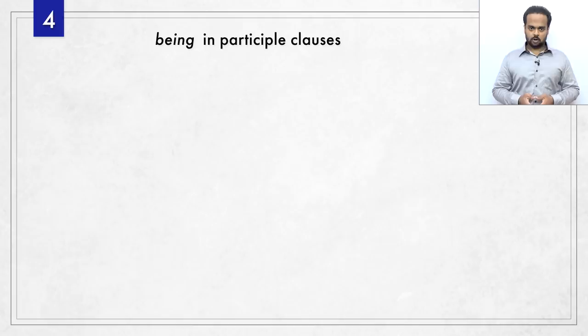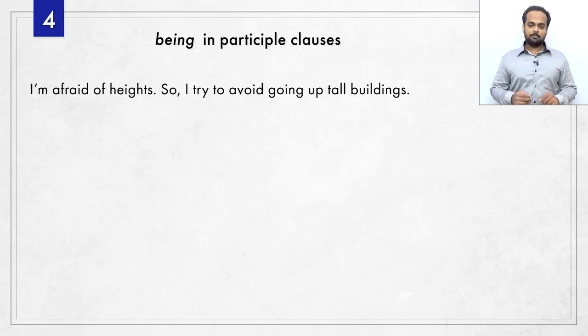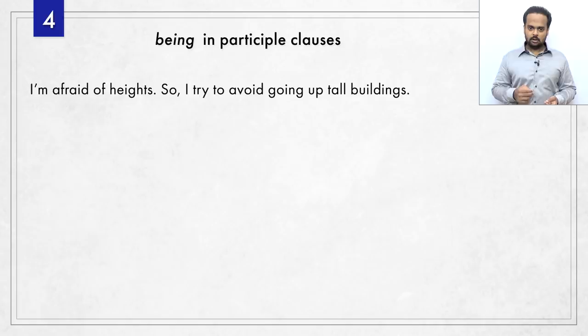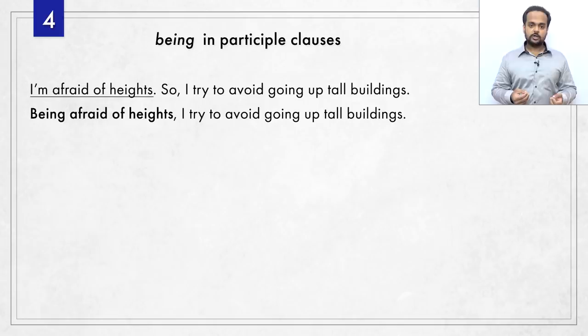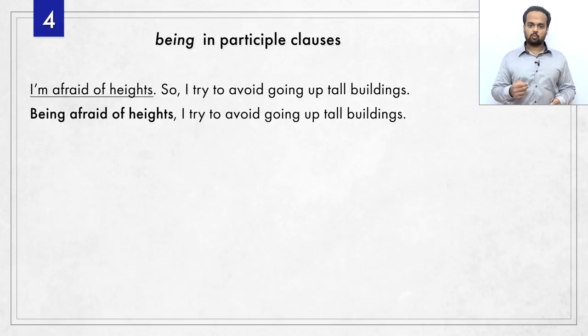The final use of being is in participle clauses. Don't worry if you don't know what that means. Take this example: I'm afraid of heights, so I try to avoid going up tall buildings. Notice the verb am in 'I am afraid' — this is a form of the verb be. So we can actually connect these two sentences in a better way: being afraid of heights, I try to avoid going up tall buildings. That first part, 'being afraid of heights,' is called a participle clause. Think of it like saying 'because I'm afraid of heights.' The participle clause makes your writing more compact and stylish.